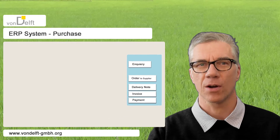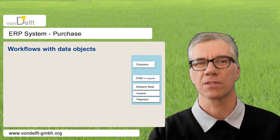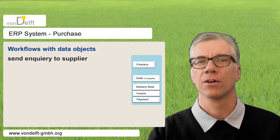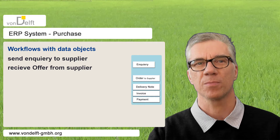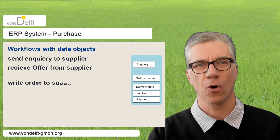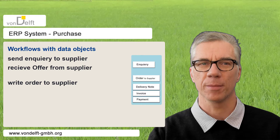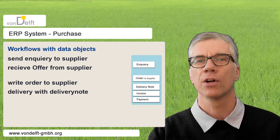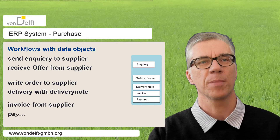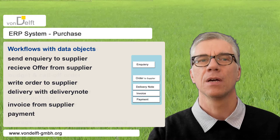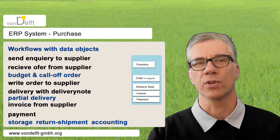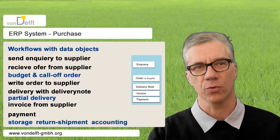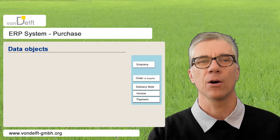In purchase there are workflows that contain data objects: to make an inquiry to the supplier, receive an offer from the supplier, write an order to the supplier, get an order confirmation, income of goods with delivery note, receive invoice from the supplier, and payment of goods. Subjects such as partial delivery, return shipment, accounting, and storage will not be treated.